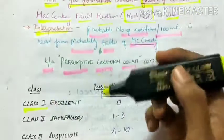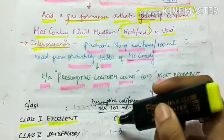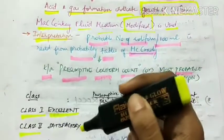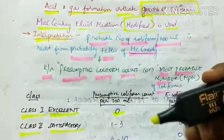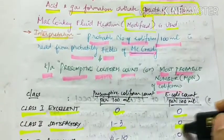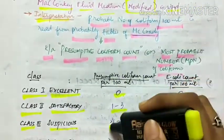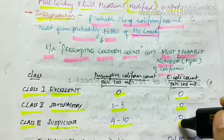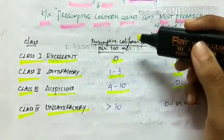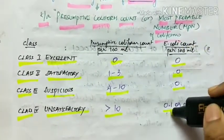Interpretation: Class 1 — excellent water: presumptive coliform count per 100 ml = 0, E. coli count = 0. Class 2 — satisfactory: coliform count 1–3, E. coli count = 0. Class 3 — suspicious: coliform count 4–10, E. coli count = 0. Class 4 — unsatisfactory: coliform count >10, E. coli count ≥0.1 per 100 ml.